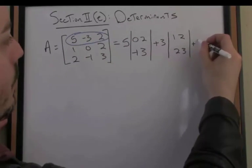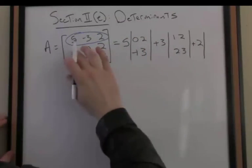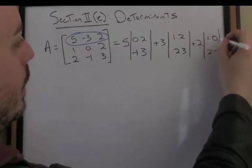And then lastly I pluck out the 2, last entry in that row, and multiply that by the corresponding submatrix here, this determinant 1, 0, 2, negative 1.